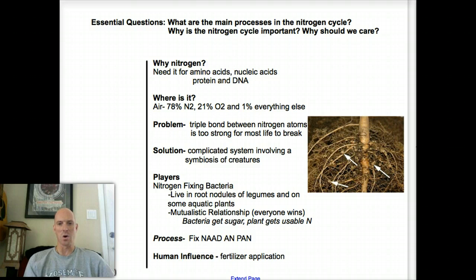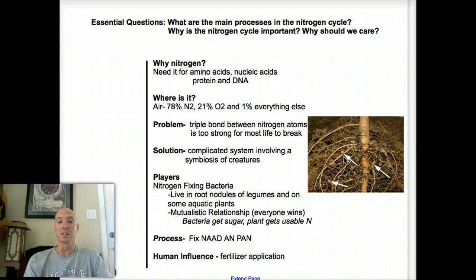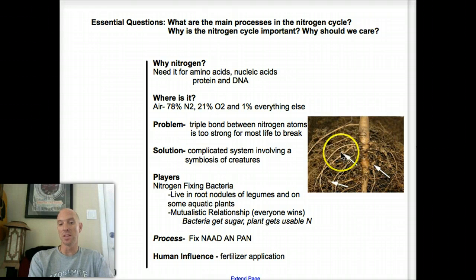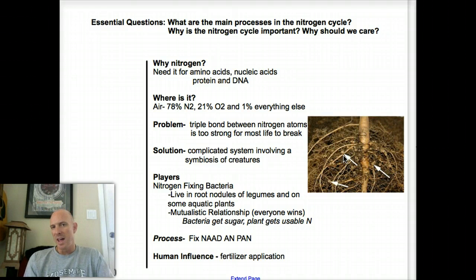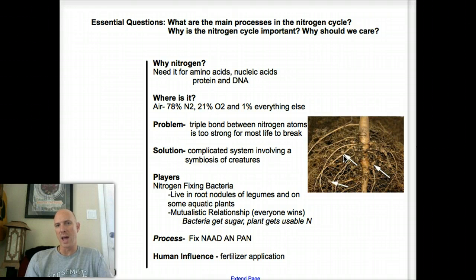Here is how it works. What's evolved is a really cool system — a mutualistic relationship between bacteria and certain types of plants. If you look at this plant here, it's the root system of a legume. Legumes are like peas, beans, alfalfa, clover. That little ball there is called a nodule, and inside is where the bacteria live. The bacteria get sugar from the plant for food, and in turn the bacteria break that nitrogen and give it to the plant in a usable form so the plant can suck it up.